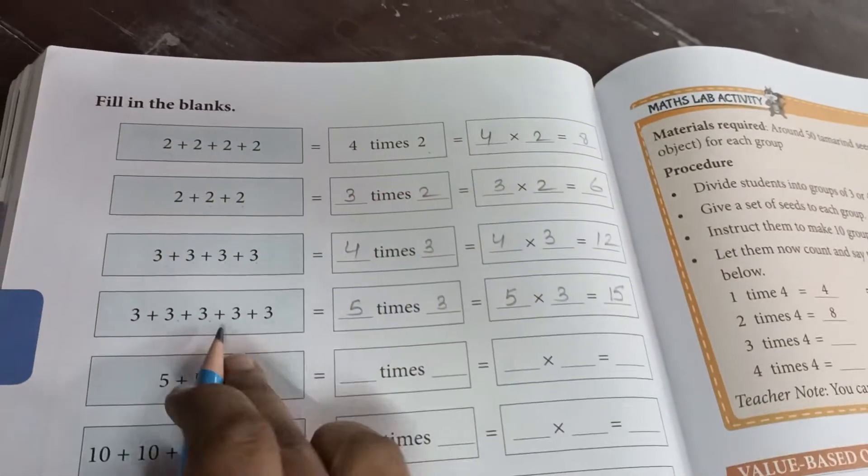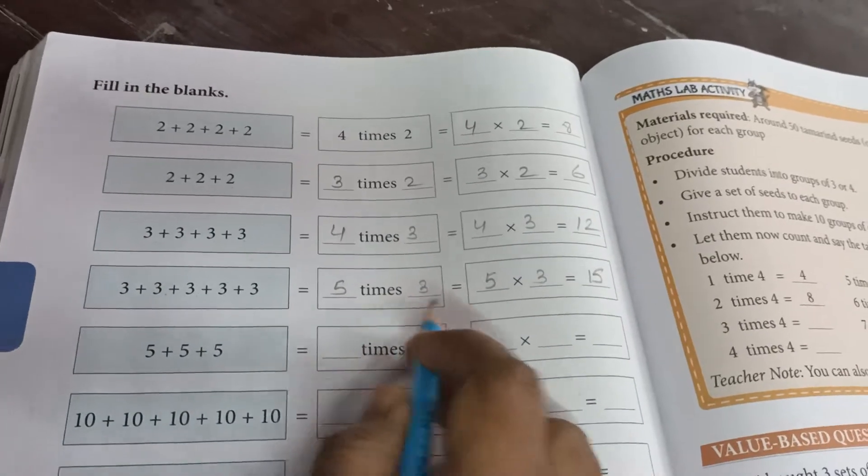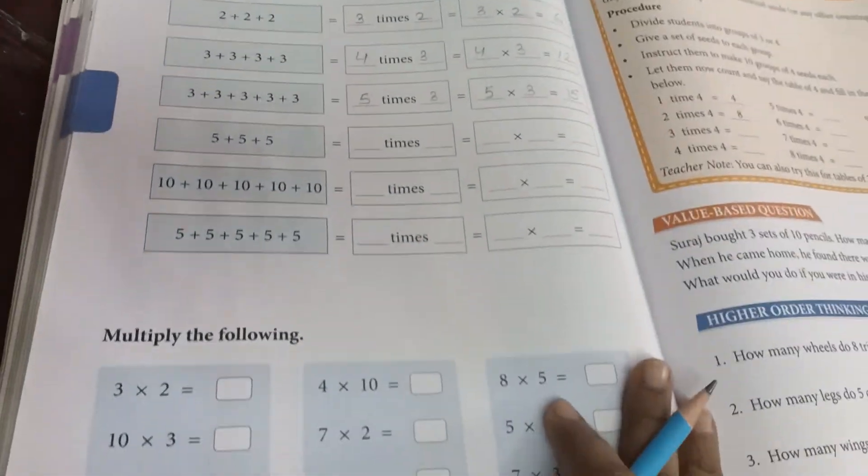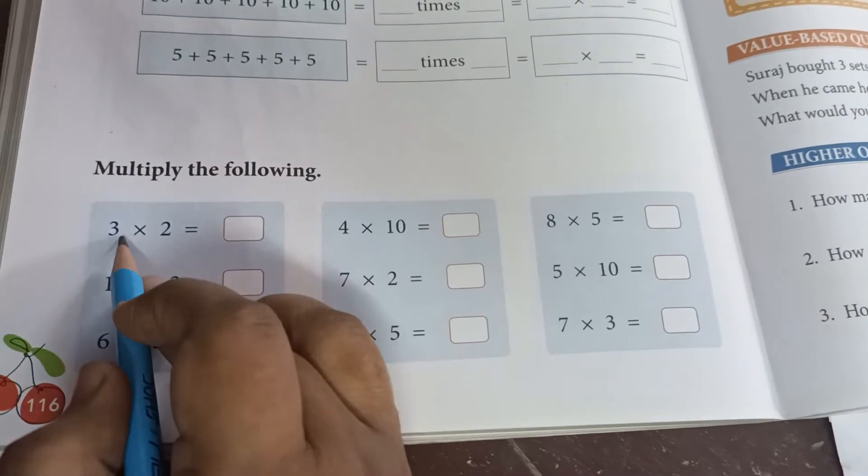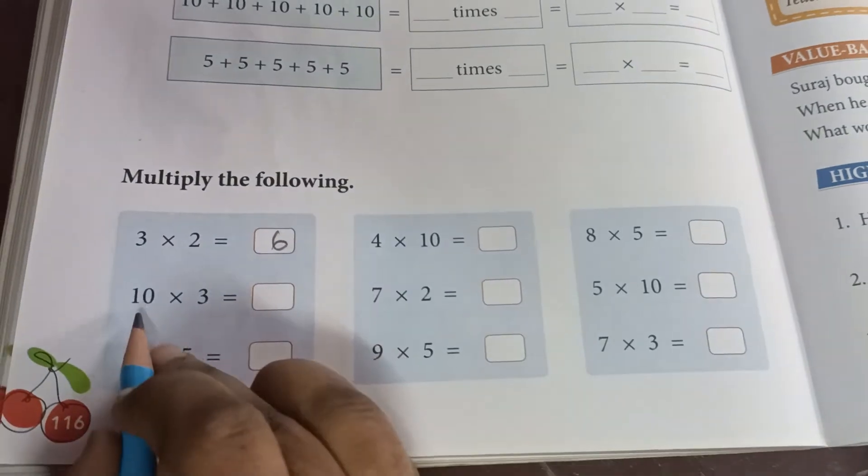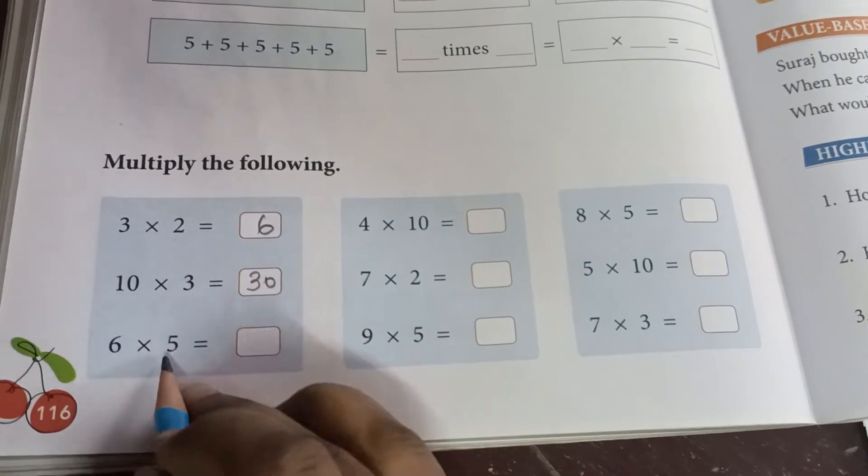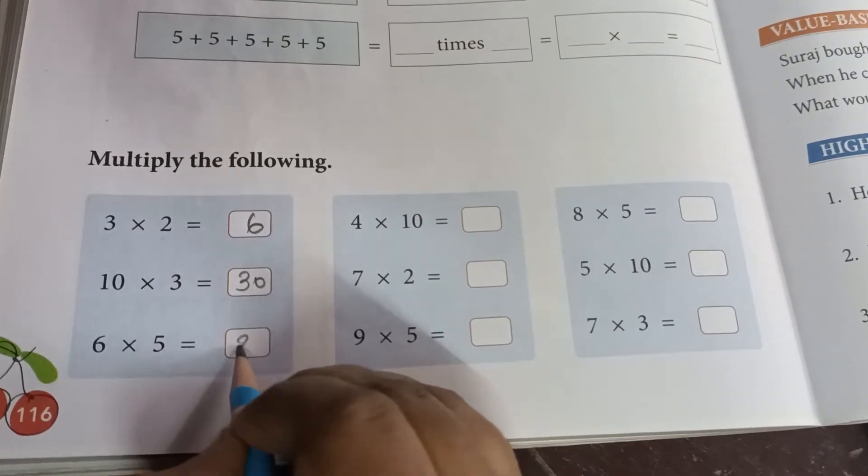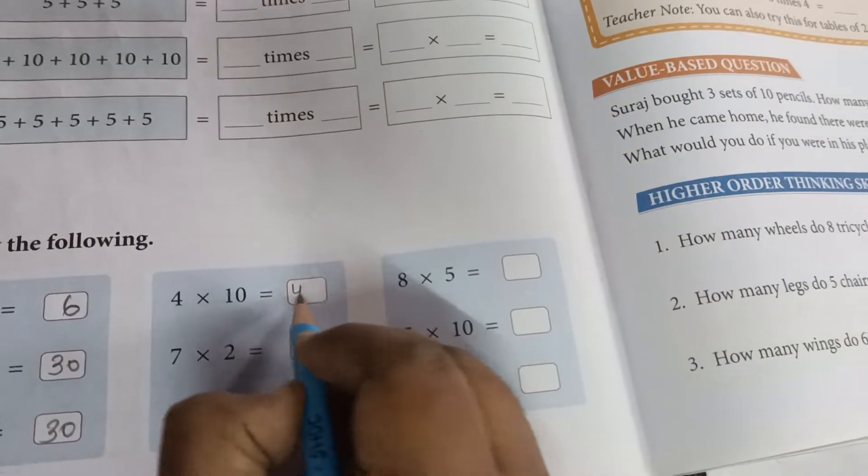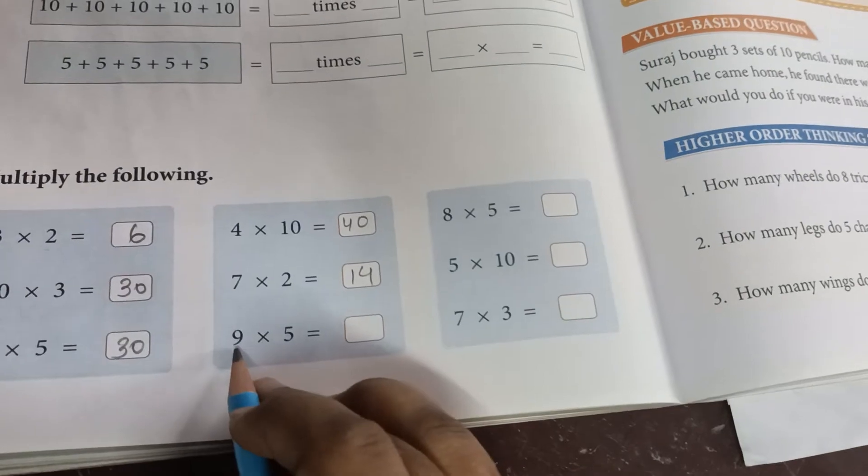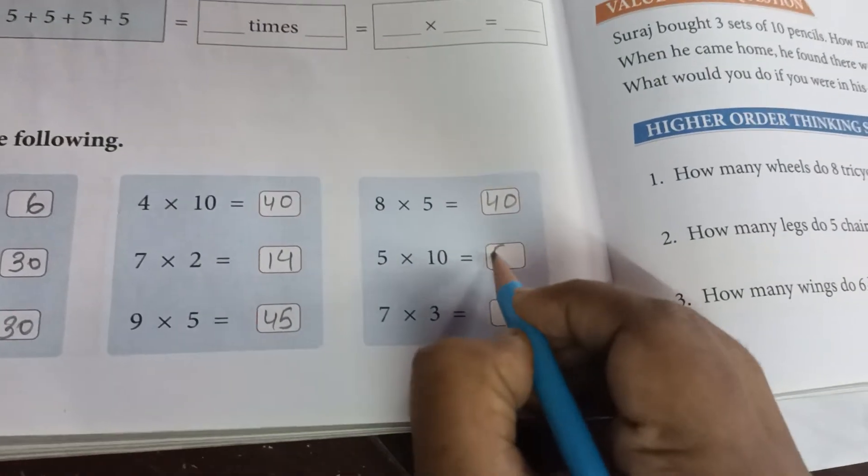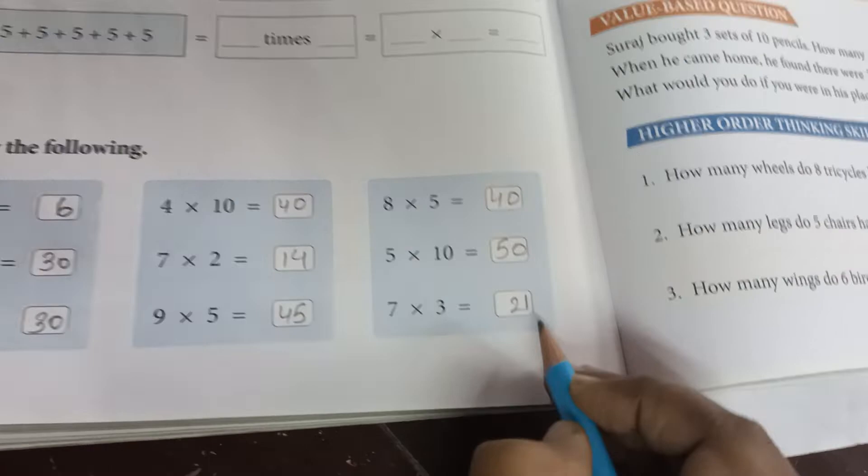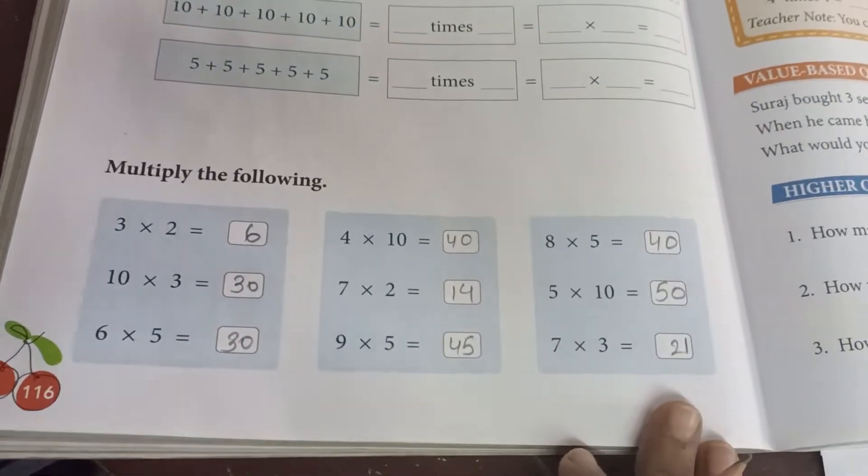You have to do it yourself. How many times it came, that will come in the first blank. Whatever number it is, you have to put in the second blank and write the multiplication value. Now, multiply the following. You have to do multiplication here. 3, 2s are 6. 10, 3s are 30. 6, 5s are 30. 4, 10s are 40. 7, 2s are 14. 9, 5s are 45. 8, 5s are 40. 5, 10s are 50. 7, 3s are 21. Simply, if you know the table, within 1 minute I have done this multiplication sum. In the same way you can also do it.